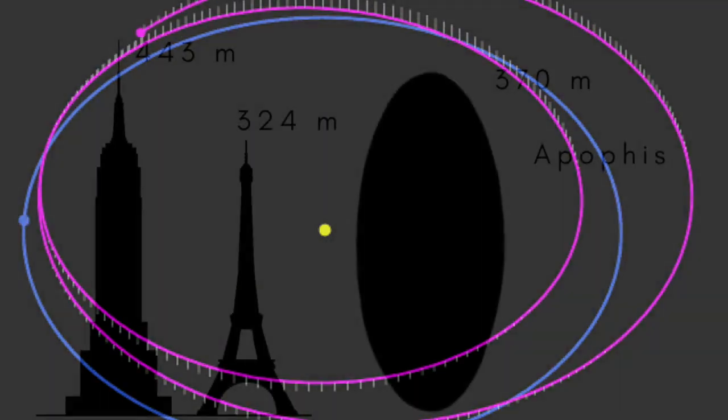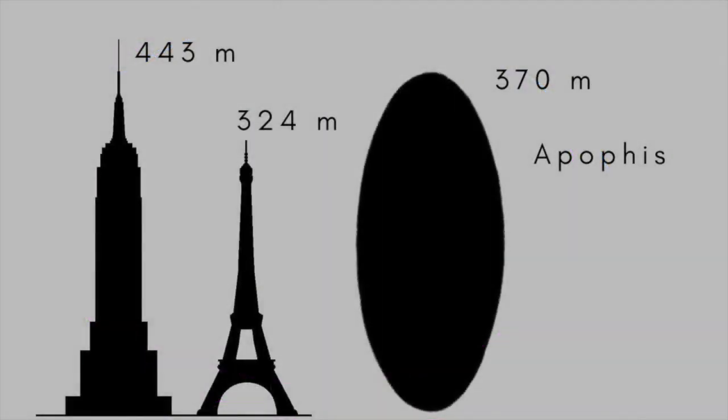Apophis is 370 metres across, and its impact would release about as much energy as 10,000 Hiroshima bombs. Depending on where it struck, it could kill tens of millions and cause destruction on an international scale.